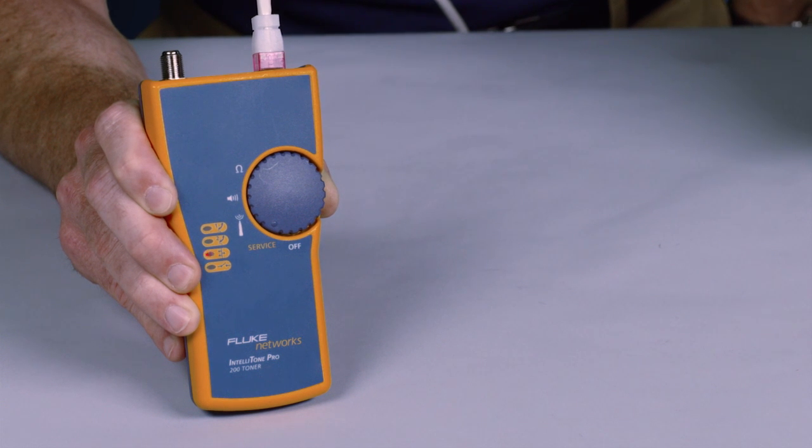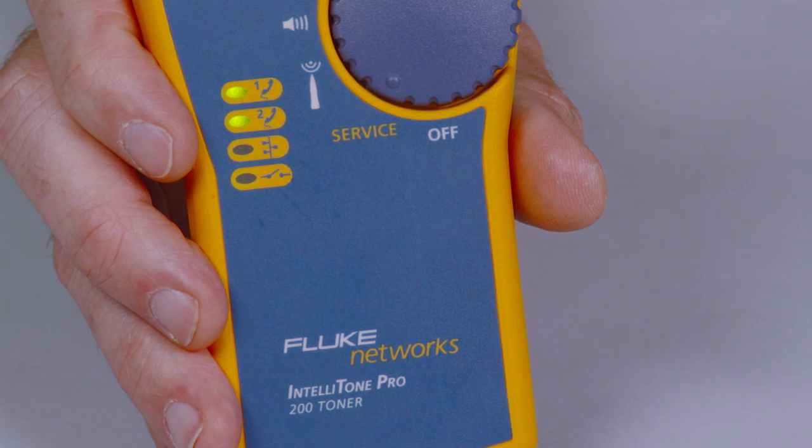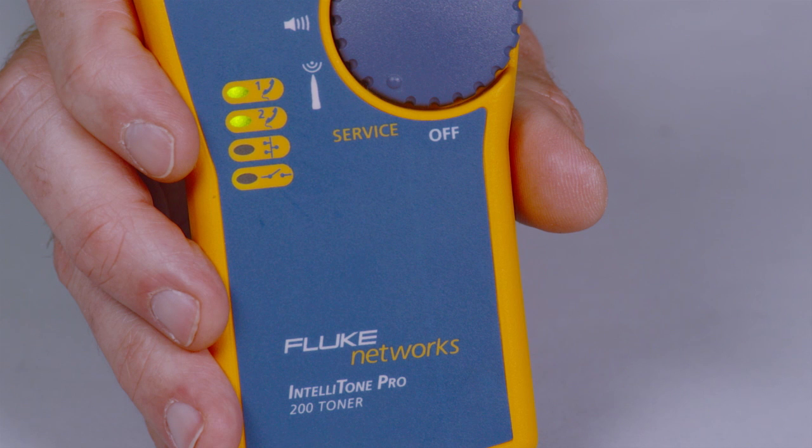Use the 100 to detect line 1 voltage, polarity, and ring. The IntelliTone Pro 200 adds line 2 troubleshooting.